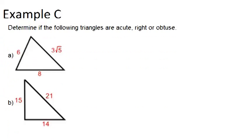Lastly, let's look at example C. Determine if the following triangles are acute, right, or obtuse. So what we're going to do in each case is test a squared plus b squared, and test c squared, and see how they compare. We're going to see if it's equal, in which case it would be a right triangle. If it's less than, in which case it would be an obtuse triangle. Or if it's greater, in which case it would be an acute triangle.